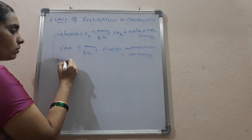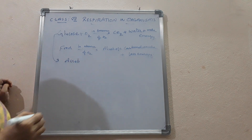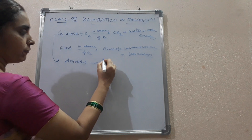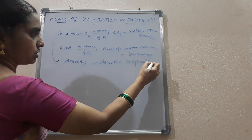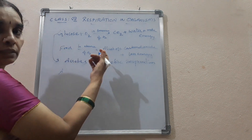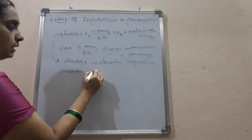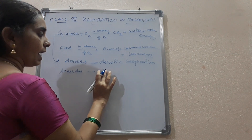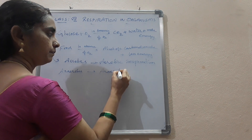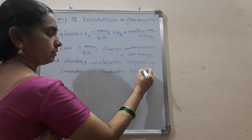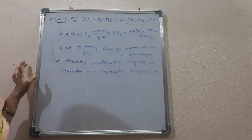The organisms that respire in the presence of oxygen are known as aerobes — they perform aerobic respiration. The organisms that perform anaerobic respiration are known as anaerobes. This is about aerobic respiration and anaerobic respiration. Hope you have understood well.